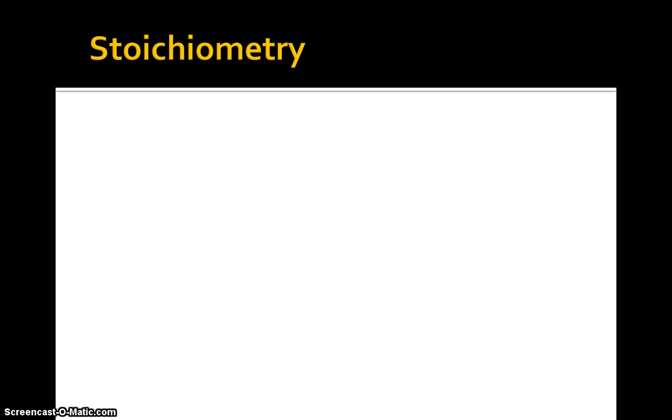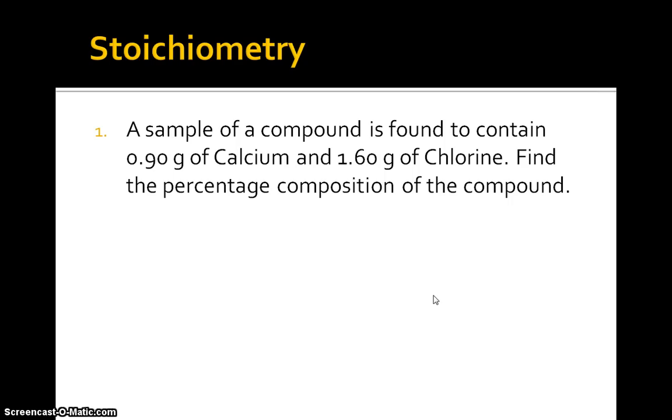A sample of a compound is found to contain 0.9 grams of calcium and 1.6 grams of chlorine. Find the percent composition of the compound. You might want to reflect on the fact that the total mass of your compound could be just found by adding this to this, so the percent composition is really a no-brainer. You just take this and divide by your total mass, then take this and divide by your total mass, and multiply by 100 respectively, and you get 36% calcium, 64% chlorine.